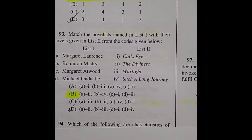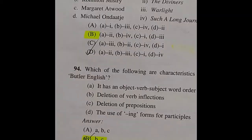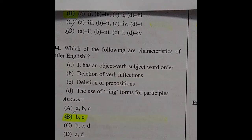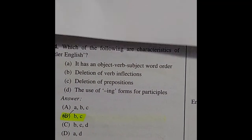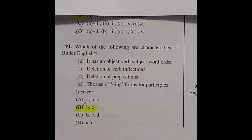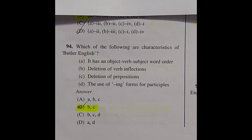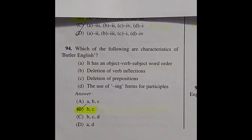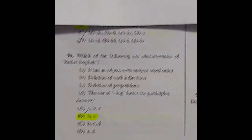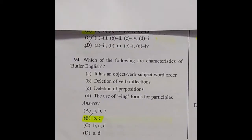Question 94: Which of the following are characteristics of Butler English? The right answer is option B: B and C — deletion of verb inflections and deletion of prepositions.